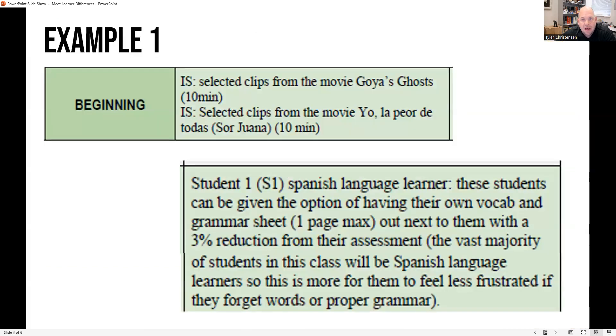So let's start first with the beginning of a lesson. In this instance, we look at the action steps here at the top, selected clips from a movie, actually from a couple of movies. So they're watching a movie. And then in the learner differences in the third column, they've identified student one, a hypothetical student in this class that might be an ESL student or an ELL student. These students can be given the option of having their own vocab and grammar sheet out next to them with a reduction from their assessment.